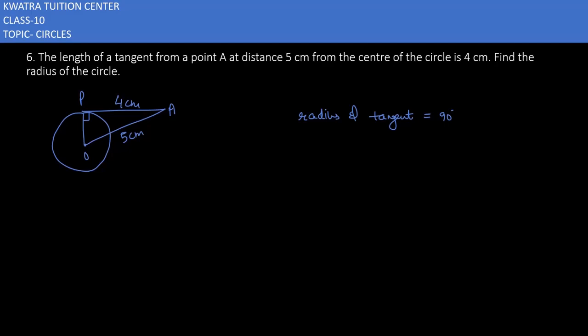So yes, the angle at P is 90 degrees. And then you can use Pythagoras theorem in this triangle. It will be OA square, because OA is hypotenuse in this case. Hypotenuse square is equal to perpendicular square, which is OP square, and the last one is PA square. So OA square will be 5.